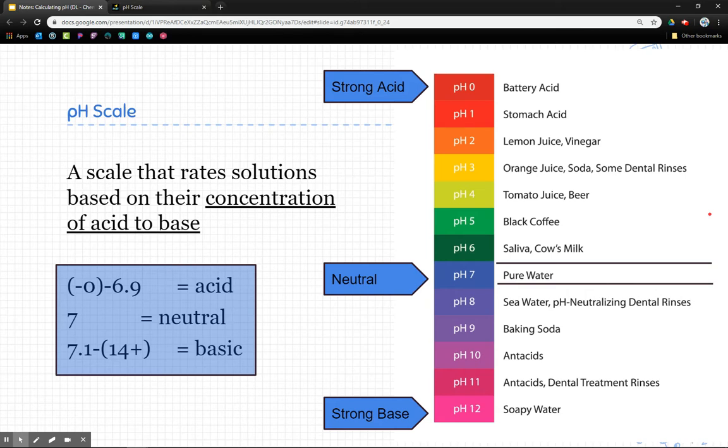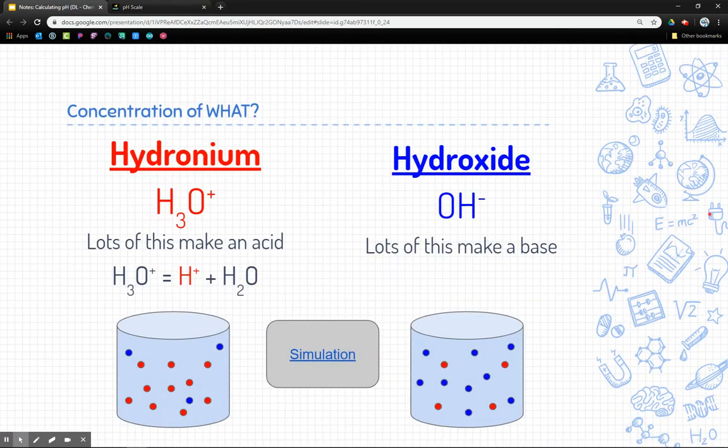In fact, the lower the number, the stronger the acid. If it's a pH of 7.1 or above, it's basic. And the higher the number, the more strong of a base it is. Now, again, the pH scale is based on the concentration.